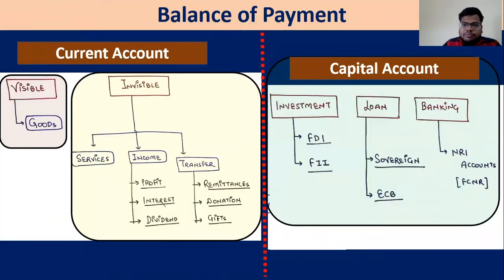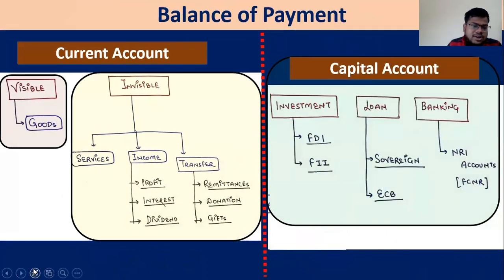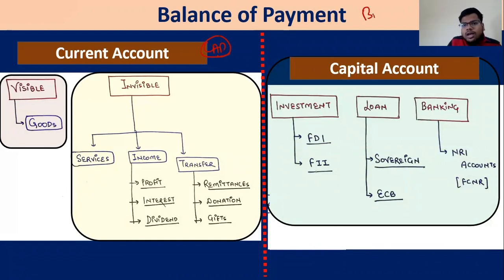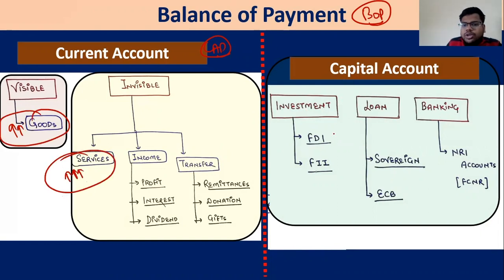Before discussing IFSCs, let us quickly discuss Balance of Payment. Balance of Payment consists of the current account and capital account. To improve your current account deficit or maintain a balanced BoP, you need to improve exports — in goods or services — and create an environment of ease of doing business to attract more FDIs and FIIs.